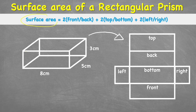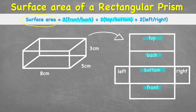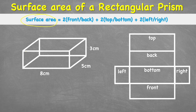The surface area equals two front or backs — because our front and back are exactly the same, so we only make one measurement and multiply by two — then we add two top and bottoms, and then we add two left or rights, because each pair of opposite faces is exactly the same.